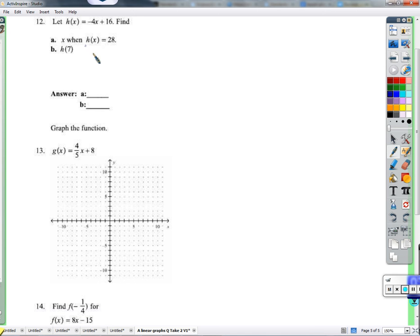Okay, this is an exercise in function notation. Let's start with b. b seems to be more natural. b just says h of seven. That means take the function h and plug in seven. If I plug in seven, I'll get negative four times seven plus 16. That's negative 28 plus 16. That's negative 12. Negative 12. Done.